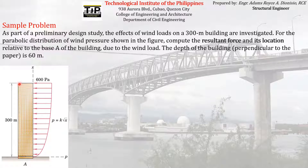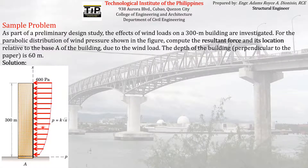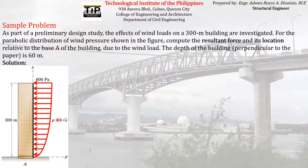So we have a 300-meter height building, and there is wind pressure acting on it all throughout its height. The magnitude of the wind pressure acting on the building depends on its location relative to the base. It follows a parabola with an equation p = k√x, where p is the wind pressure magnitude.